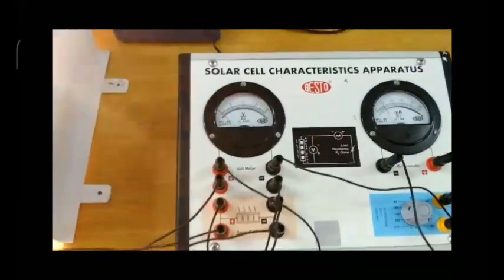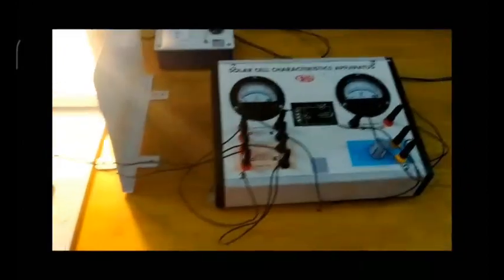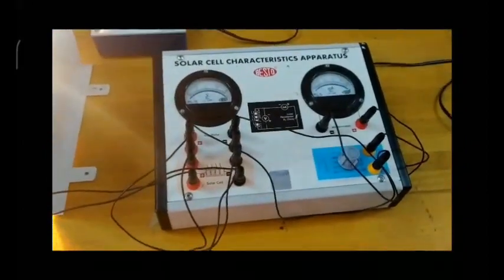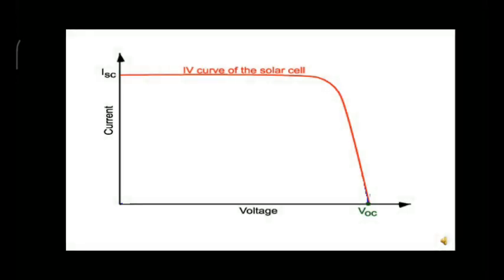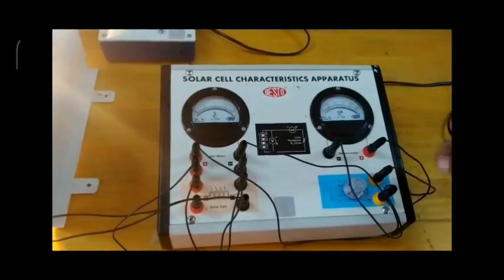So after that, just plot the IV graph between measured voltage and current, and you will get the IV graph. After getting all the voltage and current values, you can draw a graph like this. This is the IV characteristics of a solar cell. This is all about how to do this experiment.